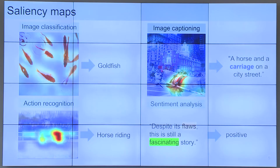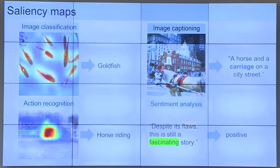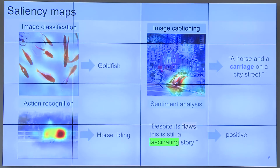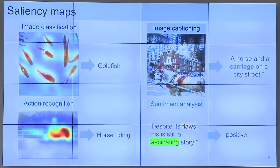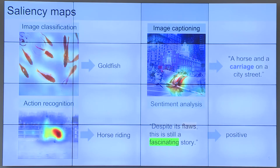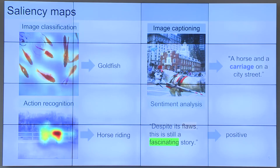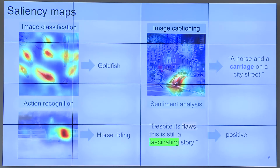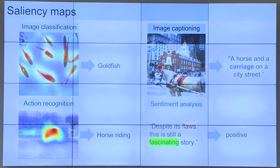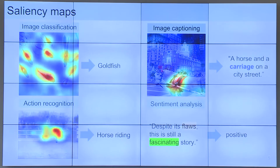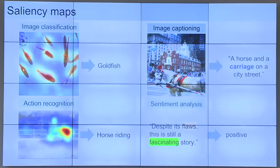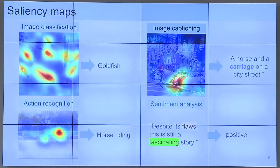Back to saliency maps — they can be used not only in image classification, but in any task where you would like to see the relative importance of the input parts. For example, in image captioning you can look at what parts of the image are more important. In action recognition, you can extend this to video and see what frames and what spatial regions are more important. Or even you can work with text and see what words contribute more to the prediction, for example in sentiment analysis.